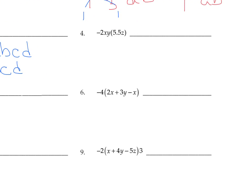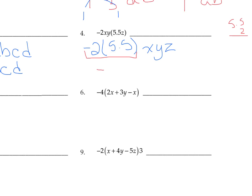On number 4, same thing — this is all still multiply. You do not have to worry about distributive property when everything is multiplying; it's just when you have add and subtract in the parentheses. Just bring the numbers to the front: negative 2 times 5.5. Variables X, Y, Z in the back. Negative times positive is negative. 2 times 5.5 is 11, so this is negative 11XYZ.